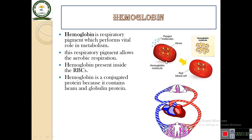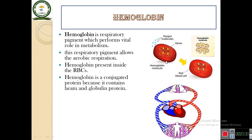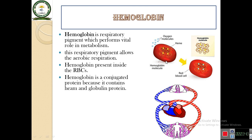Hemoglobin is a conjugated protein because it contains heme and globulin protein. A conjugated protein is also called a complex protein because it is made up of protein and a non-protein part. In hemoglobin, globulin protein and heme pigments are both present, that's why we call it a conjugated protein.